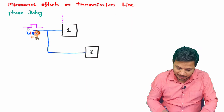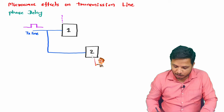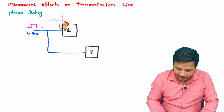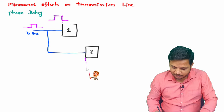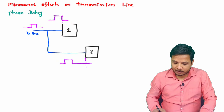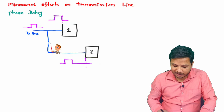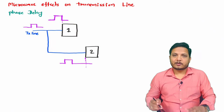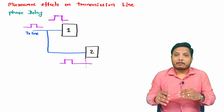What happens is when this signal reaches block one, there will be some phase delay with respect to block two. For example, after one nanosecond it reaches block one, but that same signal will have somewhat more delay reaching block two. So synchronization between block one and block two becomes very difficult because of different transmission line lengths, and this issue gets even worse as you increase the frequency of the microwave signal.